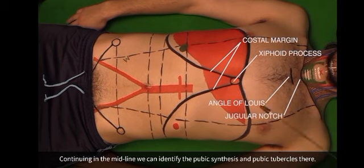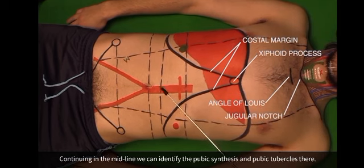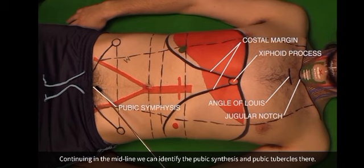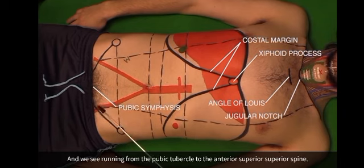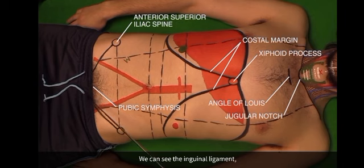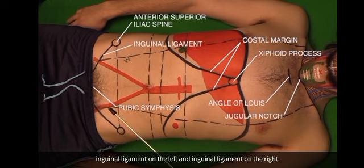Continuing in the midline, we can identify the pubic symphysis and pubic tubercles. We see running from the pubic tubercle to the anterior superior spine the inguinal ligament — inguinal ligament on the left and inguinal ligament on the right.